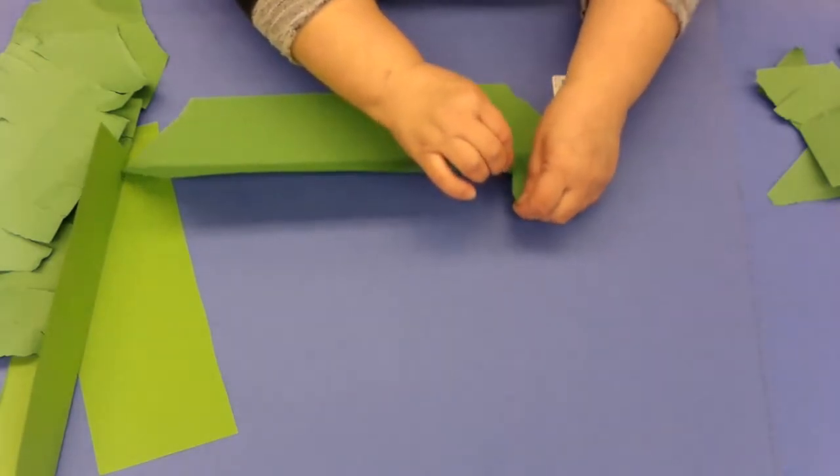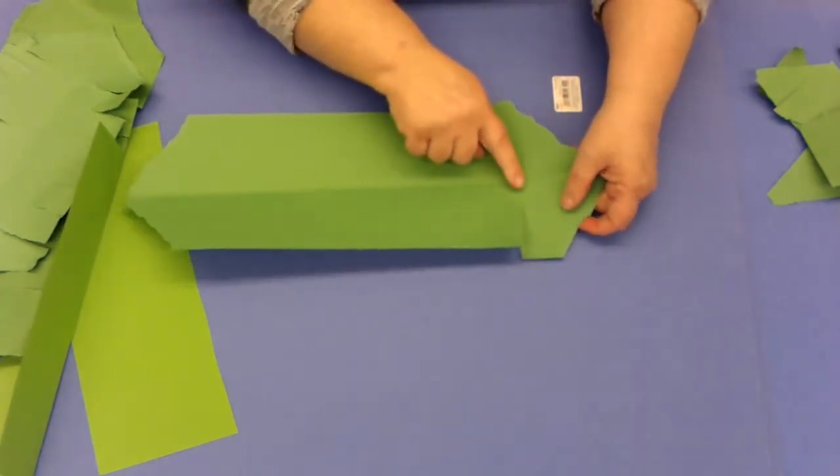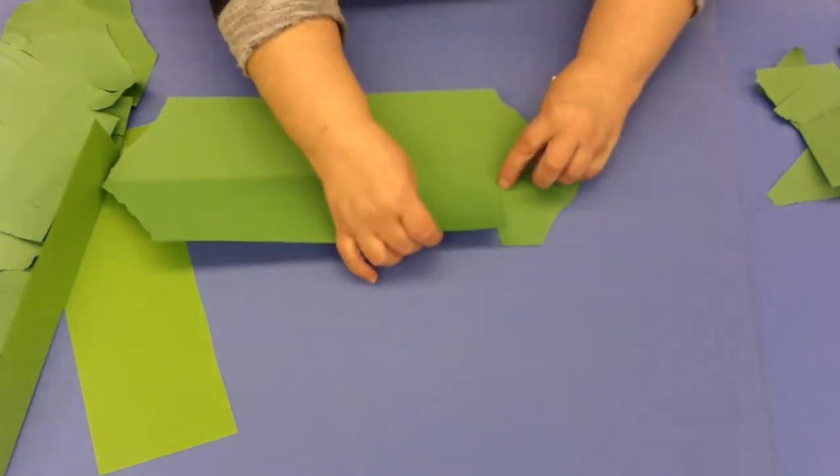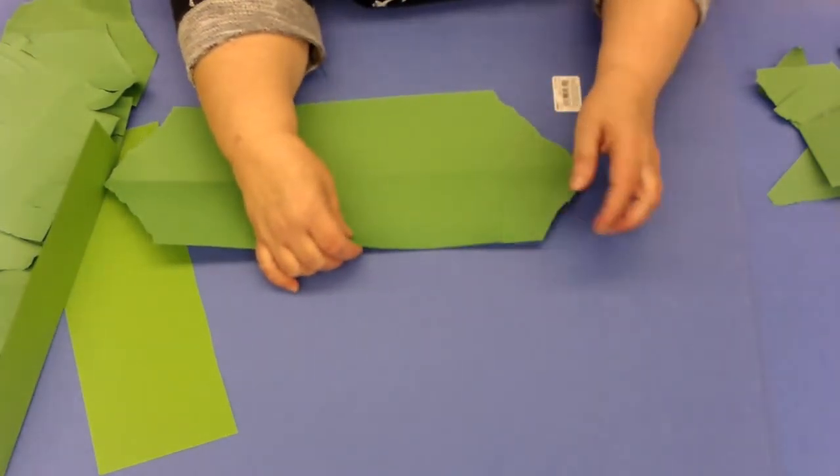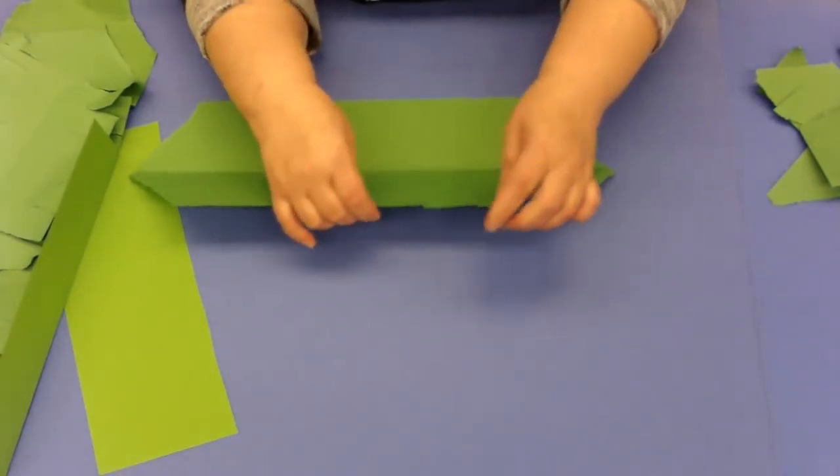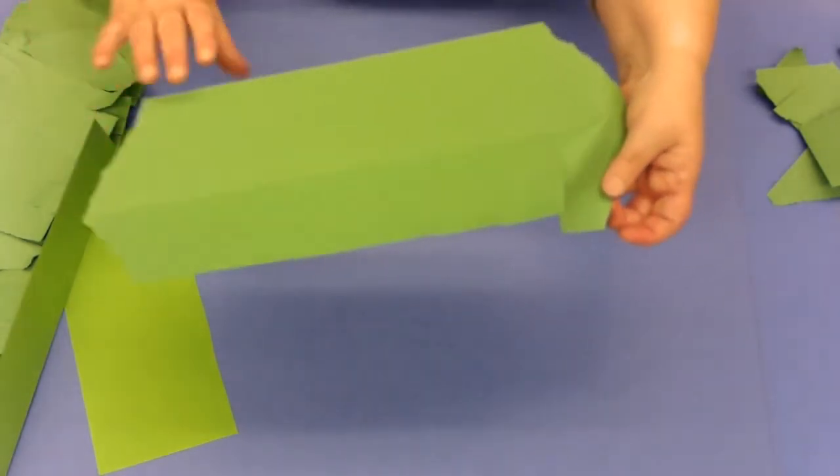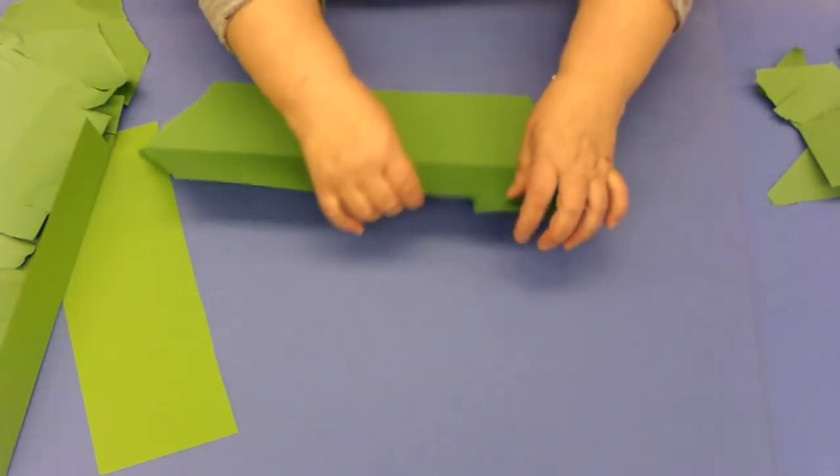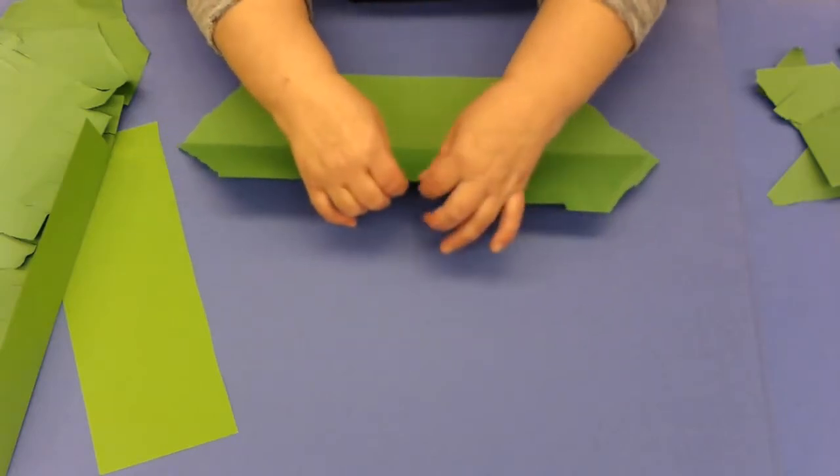All right, so our next direction, part two of this, is that we're going to tear about an inch or so apart, but we don't want to go all the way down to the fold. We want to stop just a little bit short of that fold. What we don't want to do is just do a bunch of tears that are teeny tiny because that's not going to give you that leaf effect. You've got to be a little bit courageous.